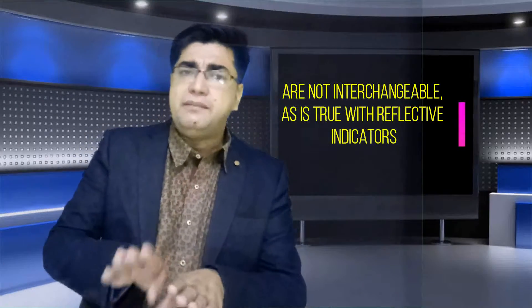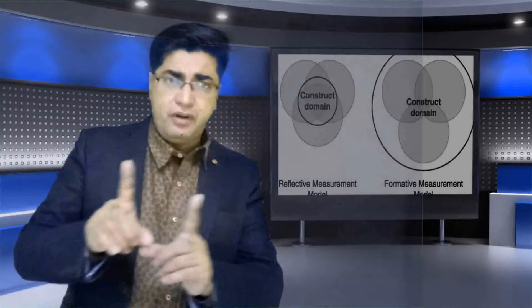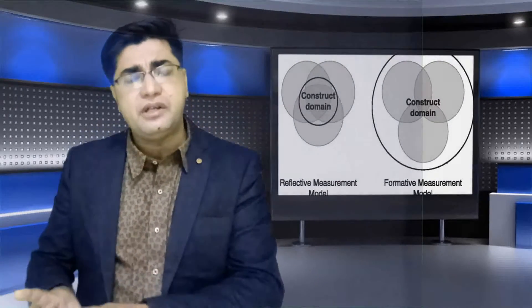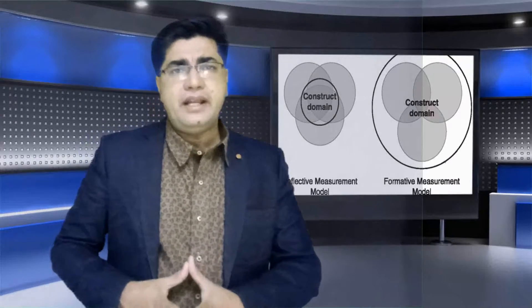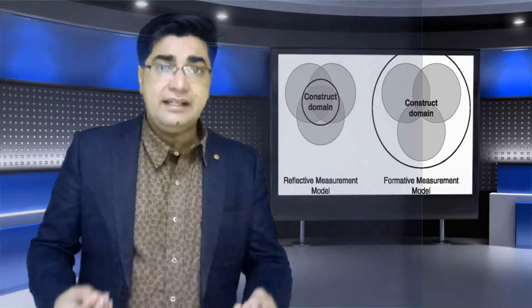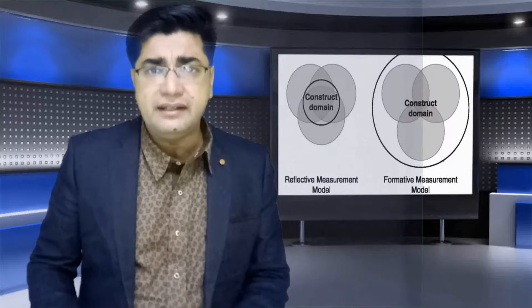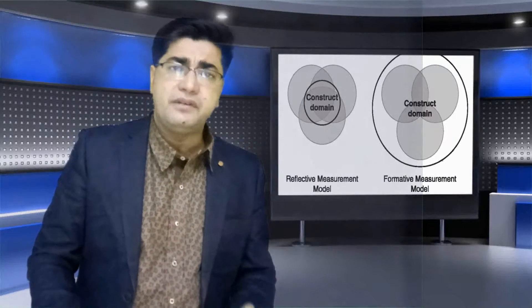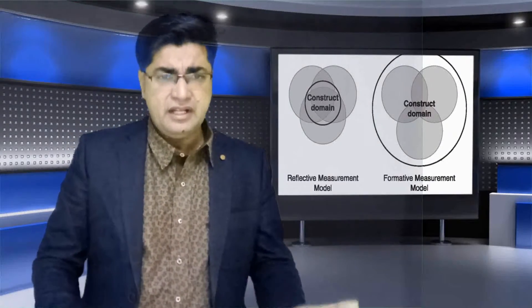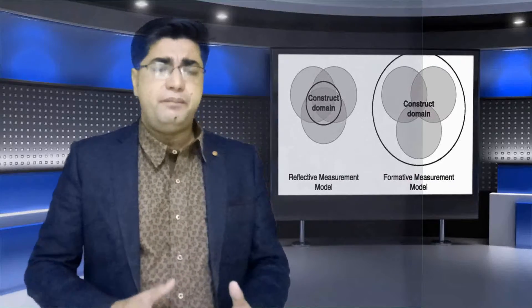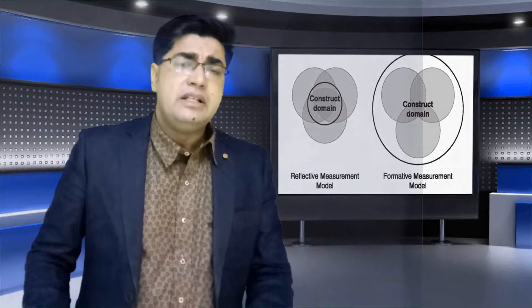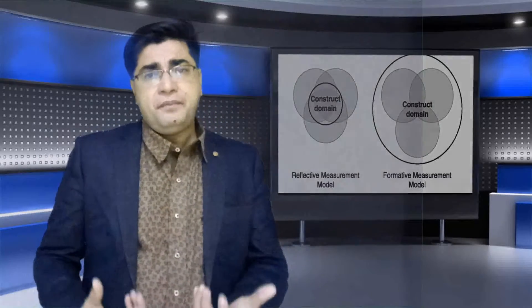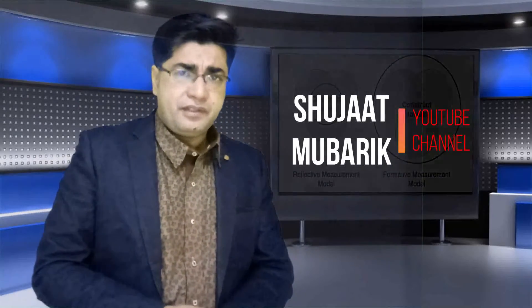So in the formative construct items are forming the construct, whereas in the reflective construct the construct is forming the items. In the formative construct we cannot delete items, whereas in the reflective construct we can delete items to some extent if, by deleting them, the AVE and CR of that particular construct is increasing. That's the fundamental difference between them. Thank you very much.